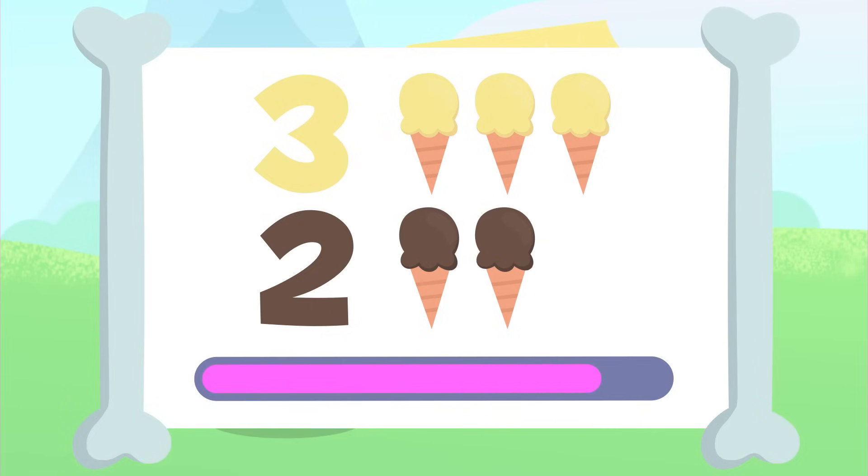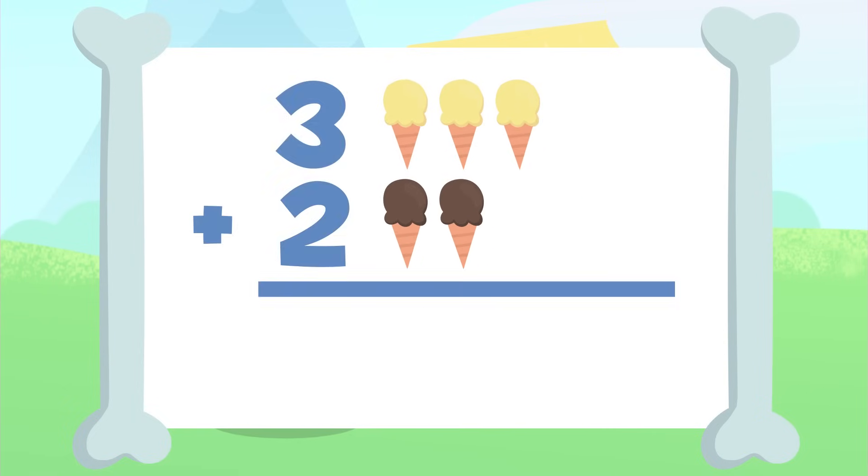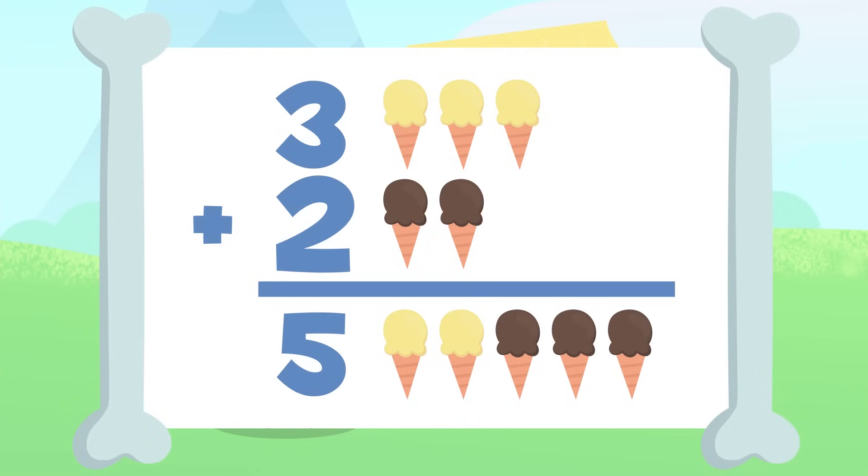That's it! The result of adding up three plus two is one, two, three, four, and five. Five! There are five ice creams. Three plus two equals five.